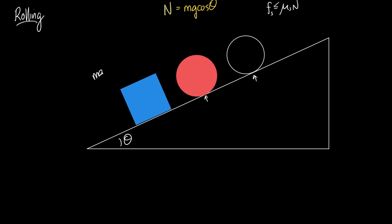So, Mg sine theta minus friction. This has to be true for all of them. Newton's second law is a law. Therefore, whether it's rolling or sliding, it still has to obey this rule.